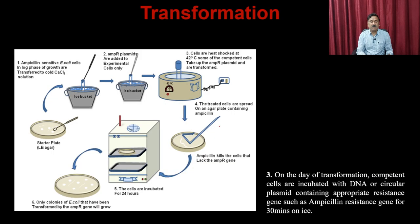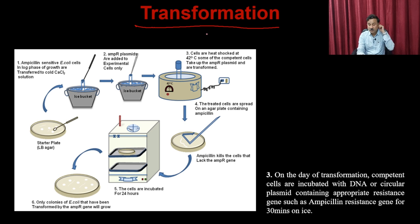The growth stage of bacteria has a significant impact on its ability to take up foreign DNA. Bacteria at log phase are more active and efficient at performing DNA damage and repair than stationary phase bacteria. Therefore, it is preferred to use log-phase bacteria for making competent cells for transformation.